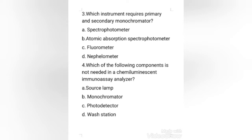A fluorometer uses a primary monochromator to isolate the wavelength for excitation and a secondary monochromator to isolate the wavelength emitted by the fluorochrome. So the right answer is option C — fluorometer requires primary and secondary monochromator.